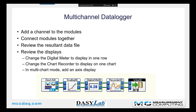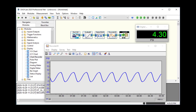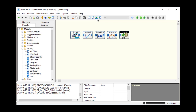Next, I want to take this same worksheet and turn it into a multi-channel data logger. I want to add a channel to each of the modules in turn, connect them all together, and then review the resultant data file. We'll look at how the displays change and what you can do within the displays — for example, displaying the digital meter in a row instead of a column, or the chart recorder on one chart instead of multiple charts. Starting with the current worksheet, the first thing to do is minimize the displays to make it easier to work on the modules.